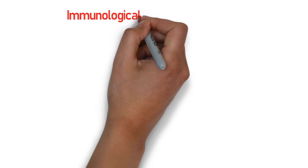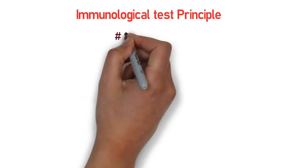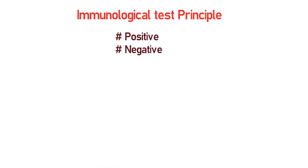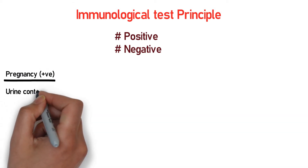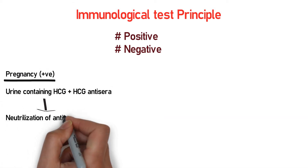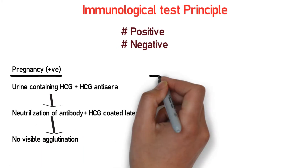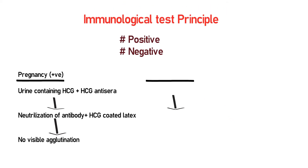Now let's see the principle of the immunological test. We examine the mechanism under two conditions. Condition one — positive result: when urine containing HCG is mixed with HCG anti-sera, neutralization of the antibody occurs, and the HCG-coated latex particles react, resulting in no visible agglutination. The result shows positive.